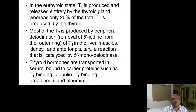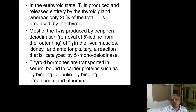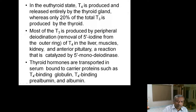In the euthyroid state, T4 is produced and released entirely by the thyroid gland, whereas only 20% of total T3 is produced by the thyroid gland. The rest of T3 comes from peripheral deiodination — removal of the 5-iodine from the outer ring of T4 — which happens in the liver, muscles, kidney, and anterior pituitary.